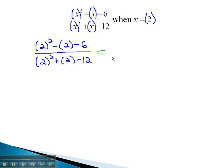We can simplify this using the order of operations, doing the exponents first in both the numerator and denominator. 2 squared is 4, minus 2, minus 6, over 2 squared is 4, plus 2, minus 12.